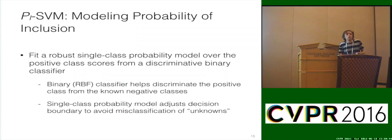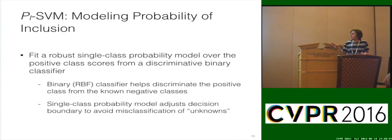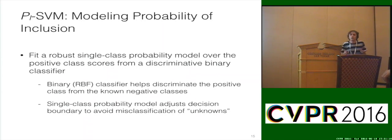Thinking about the work we did with attribute calibration — that really wasn't inherently open set, because we had a closed set of attributes and an established dataset. But we really liked the calibration baked right into the SVM formulation. So trying to extend that to open set, we introduced this new formulation called the PI SVM, which models probability of class inclusion — that's where we get P-sub-I in the name. In a nutshell, we're fitting a robust single-class probability model over the positive class scores from a discriminative binary classifier.